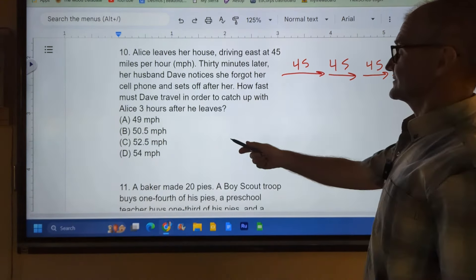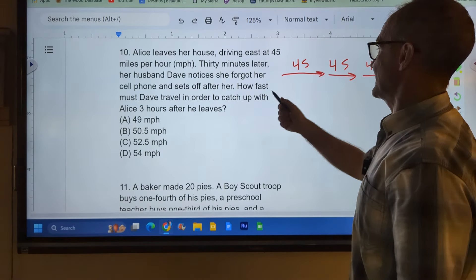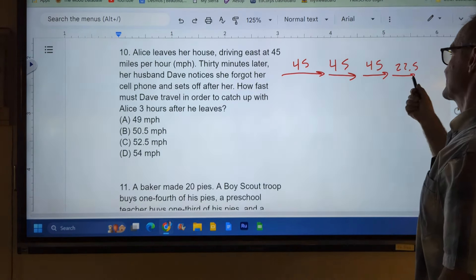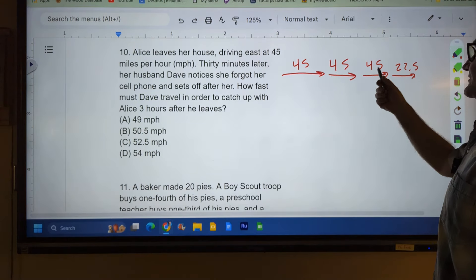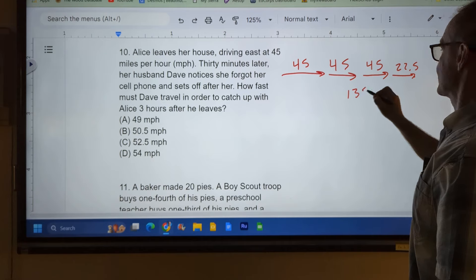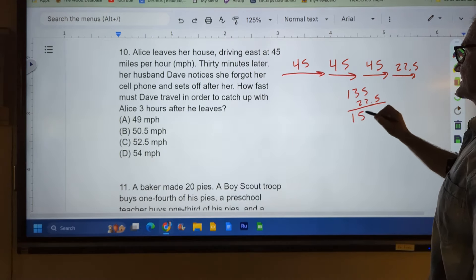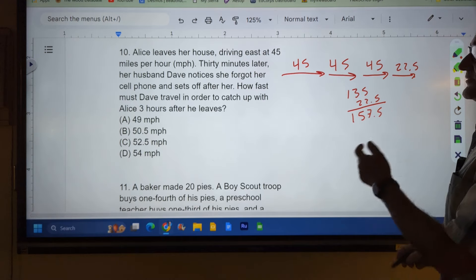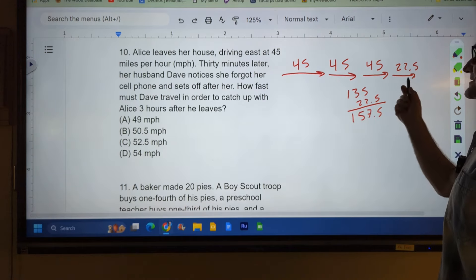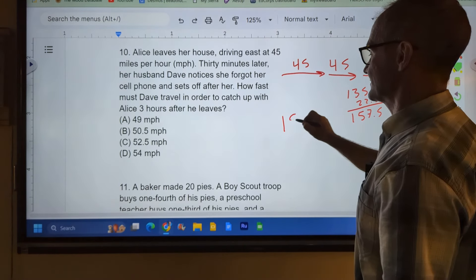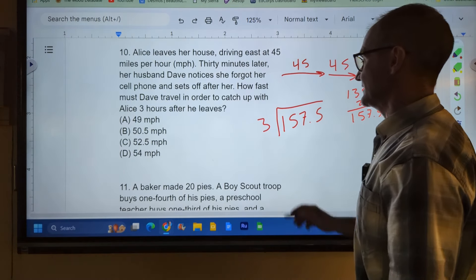And then thirty minutes more, which is 22.5. So let's see if any of these make sense here. So Dave is going to have to go this total number of mileage. What is that? 90, 135. We got 135 plus 22.5. 157.5 in three hours, right? Because she has a thirty-minute head start. So in three hours, Dave has to go 157.5. So we're going to divide that by 3.